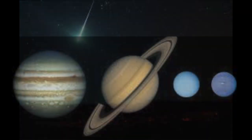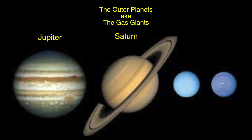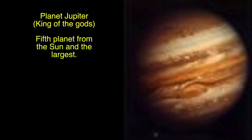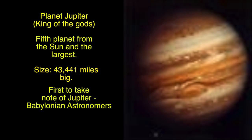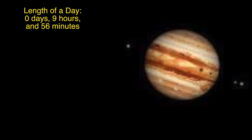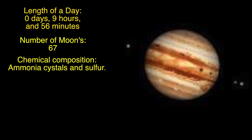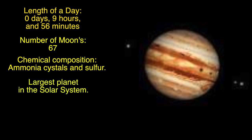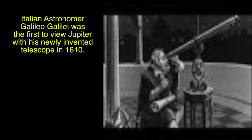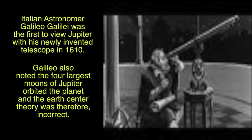We now arrive at what are called the Outer Planets, also known as the Gas Giants: Jupiter, Saturn, Uranus, Neptune. Planet Jupiter, King of the Gods, is the fifth planet from the Sun and the largest, at 43,441 miles big. The first to take note of Jupiter were the Babylonian astronomers. Jupiter orbits the Sun every 11.9 years. Length of a day: 9 hours and 56 minutes. Number of moons: 67. Chemical composition: ammonia crystals and sulfur. No landmass can be found on Jupiter. Italian astronomer Galileo Galilei was the first to view Jupiter with his newly invented telescope in 1610. Galileo also noted that the four largest moons of Jupiter orbit the planet, proving the Earth-center theory was incorrect.